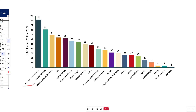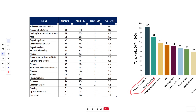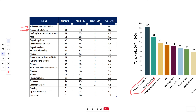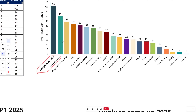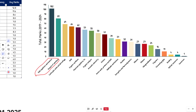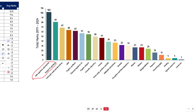Next up we have amount of substance. The two highest topics for Paper 2 are actually both physical topics. Amount of substance is purely physical. Rate equations is a physical topic with organic application — they'll give you some organic substances, an organic reaction, and there'll be some sort of amount of substance calculations associated with that. Then it jumps into the organic side of things: carboxylic acids and derivatives, then NMR, and then organic synthesis.